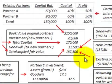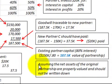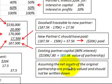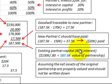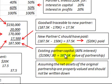Let's look at how we calculate the total implied fair value of the partnership. This is based on assuming that the net assets of the original partnership between A and B are properly valued and should not be written down or written up. Based on that, we take the existing partners' capital. After the new partner enters, they'll have an 80% interest, with the new partner getting 20%. So we take the $150,000 capital balance divided by 80%, which gives us $187,500 as the implied value of the partnership.